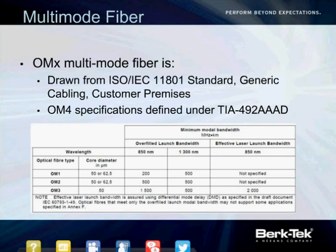The OM classification comes from ISO/IEC 11801, Table 27, which specifies the fiber type, its bandwidth, and its corresponding OM value. Back when this was written, OM1 could be either 50 microns or 62.5, likewise for OM2. If you read the 40/100 gigabit standard, you'll notice that for multimode it specifies a minimum of OM3. Keep that in mind as you move forward with your spec.